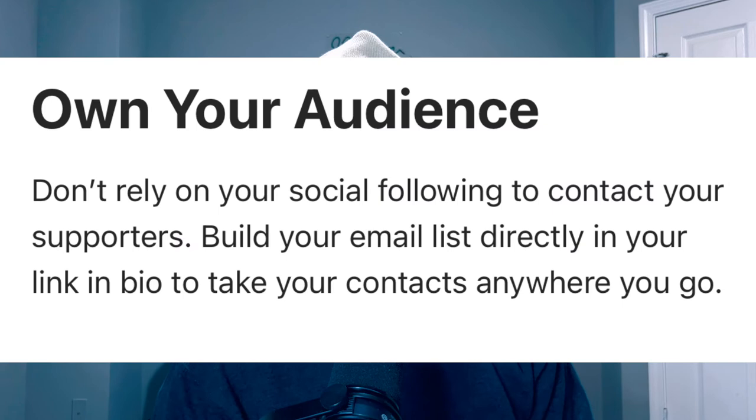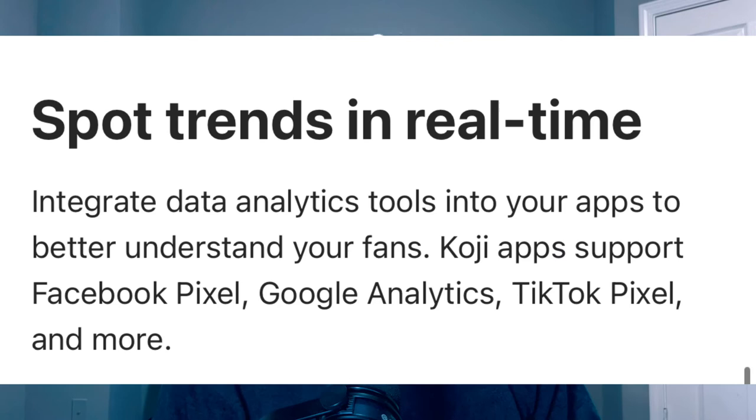Own your audience — don't rely on your social following to contact your supporters. Build your email list directly in your link-in-bio to take your contacts anywhere you go. You can literally build your mailing list in the Koji app. This takes away the need for some of those other apps you gotta pay for — the MailChimps and other places. They'll give you a free tier but once you hit a certain threshold, they're gonna want more money. Koji has it for you.